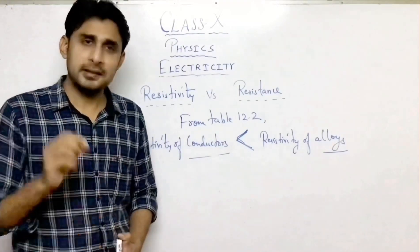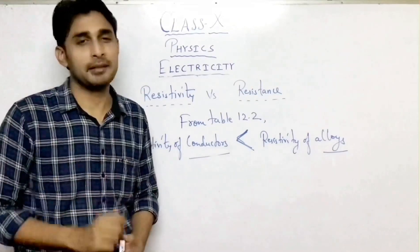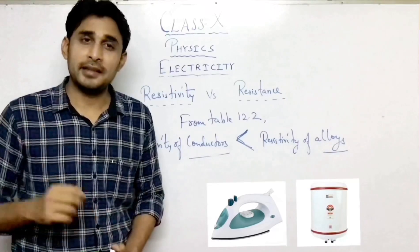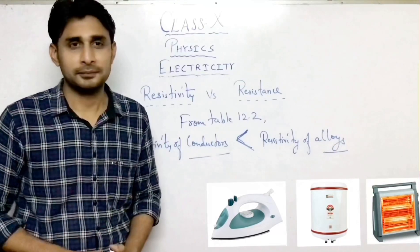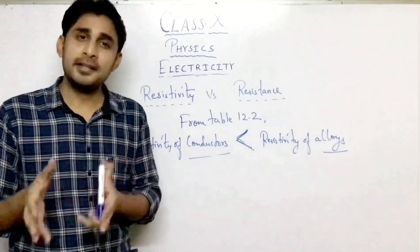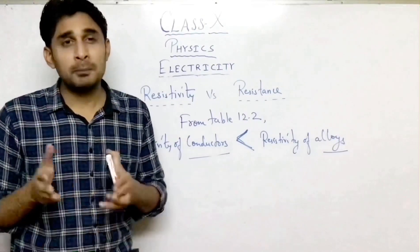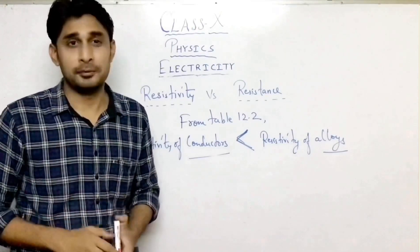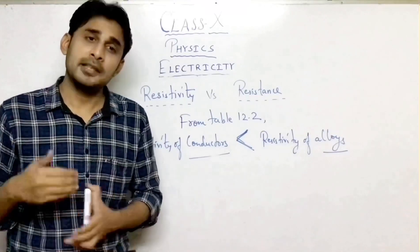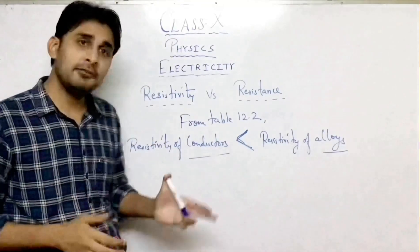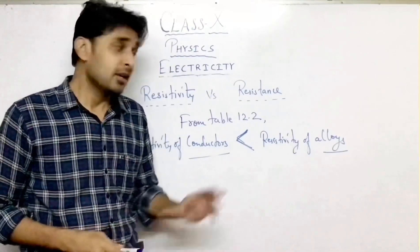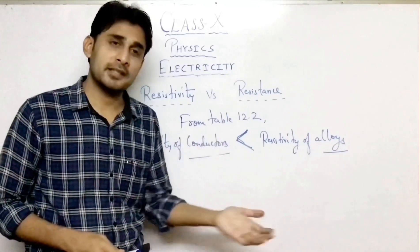This is the reason alloys are used in electrical heating devices, like electric iron, electric geyser, electric heater, etc. This is because they are able to withstand higher temperatures and will not break easily when high current passes through them and the temperature increases. When temperature increases, metals or conductors break more easily compared to alloys, because alloys have higher resistivity and can withstand it.